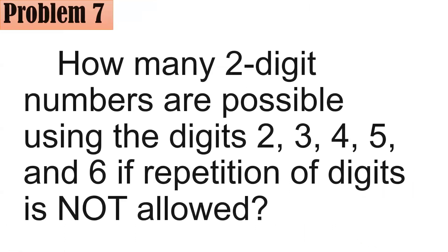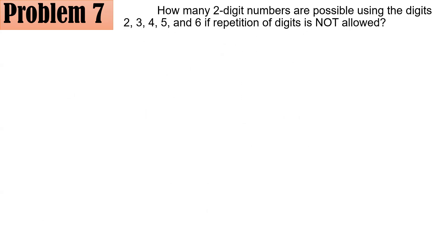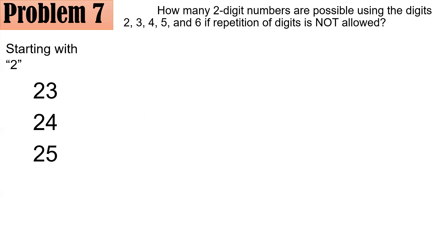Number seven: how many two-digit numbers are possible using the digits 2, 3, 4, 5, and 6 if repetition of digits is not allowed? Two-digit numbers have a tens digit and a ones digit. If you use a digit in the tens place, you cannot use it in the ones place. For example, starting with 2: you cannot have 22, so your options going left to right are 23, 24, 25, and 26.